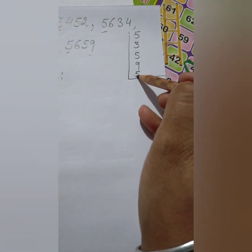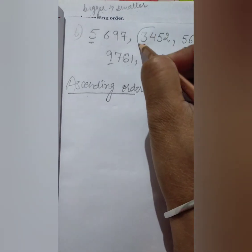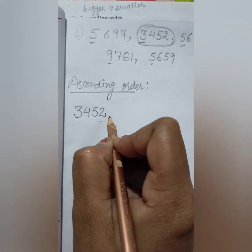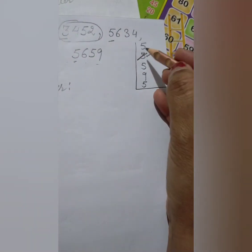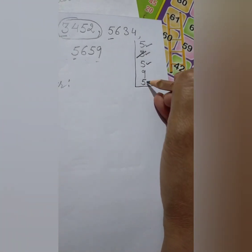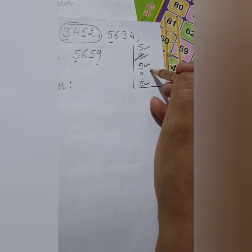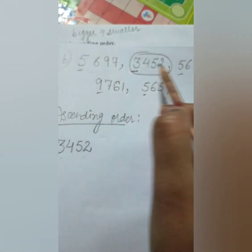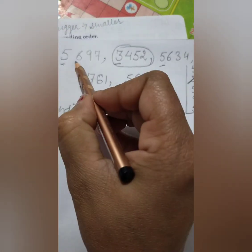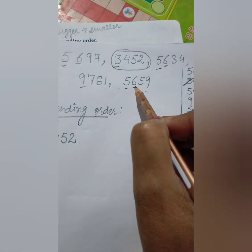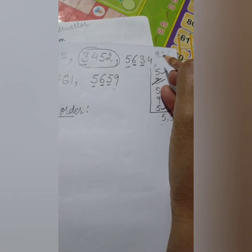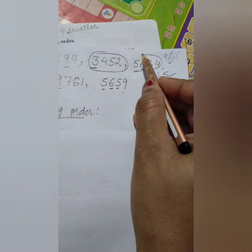The smallest first digit is 3, so we write 3452 first. After 3, the next digit is 5. Three numbers start with 5, so we compare further. The second digit for all three is 6. The third digit is also 6 for all. So we compare the fourth digit: 3, 5, and 9 — the smallest is 3, so 5634 comes next.